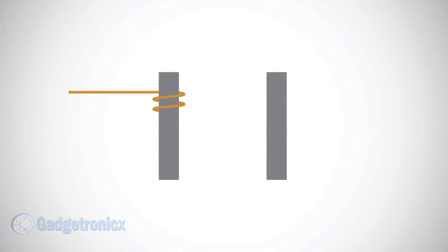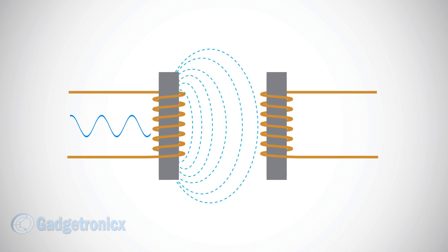Transformers work based on the principle of electromagnetic induction. This means when AC signal is passed through a coil, a magnetic field is generated around the coil. This induces AC signal which is proportional to original signal in the coil that is placed within the magnetic field.